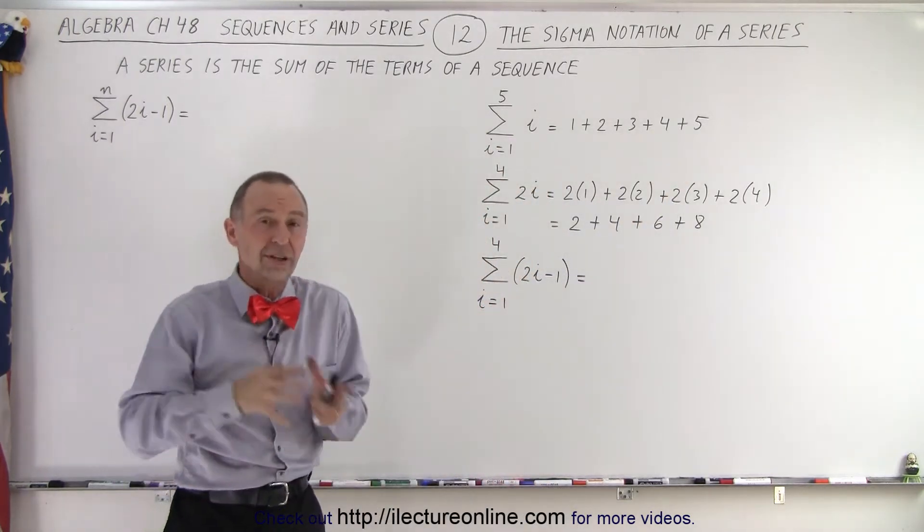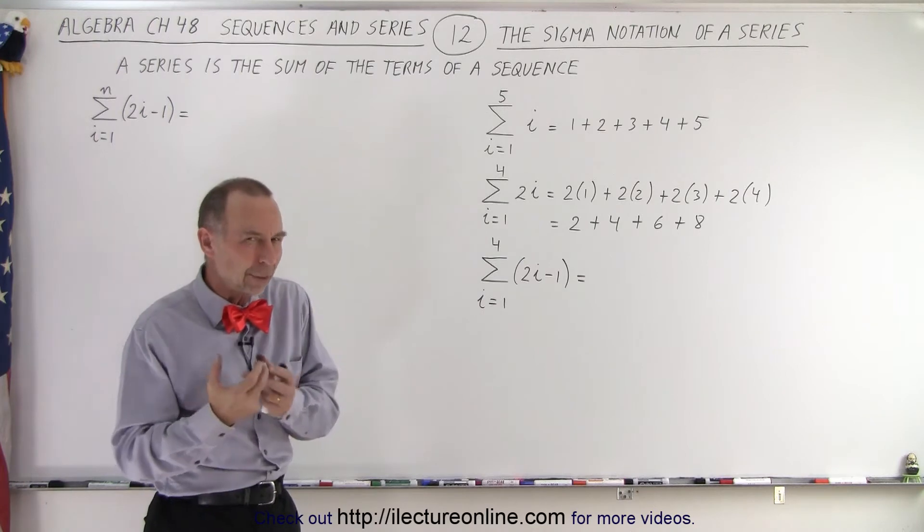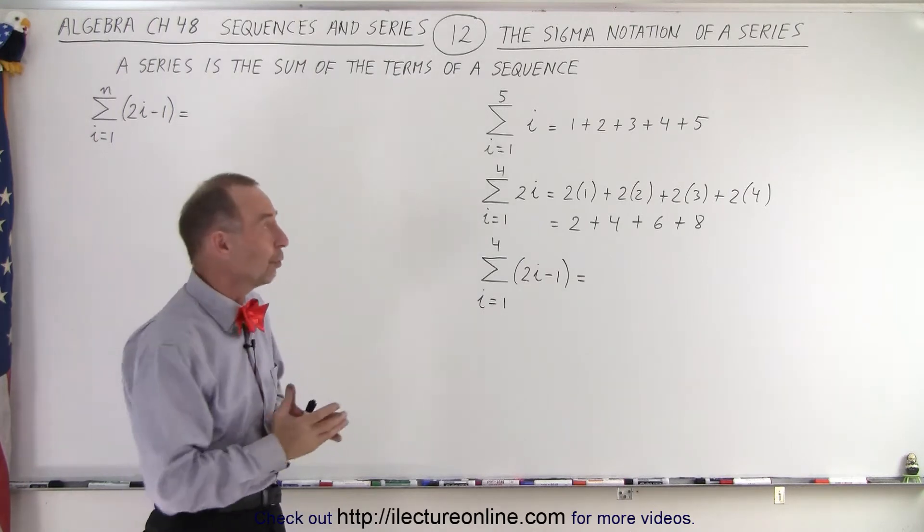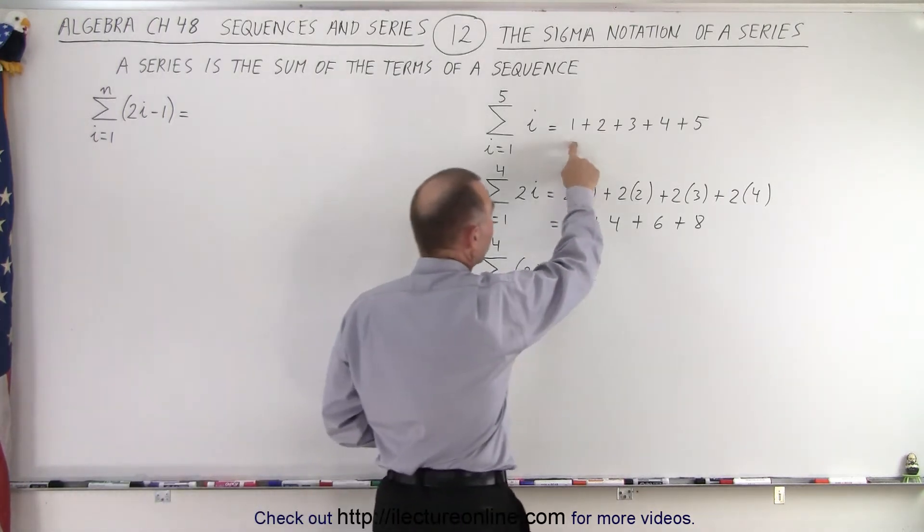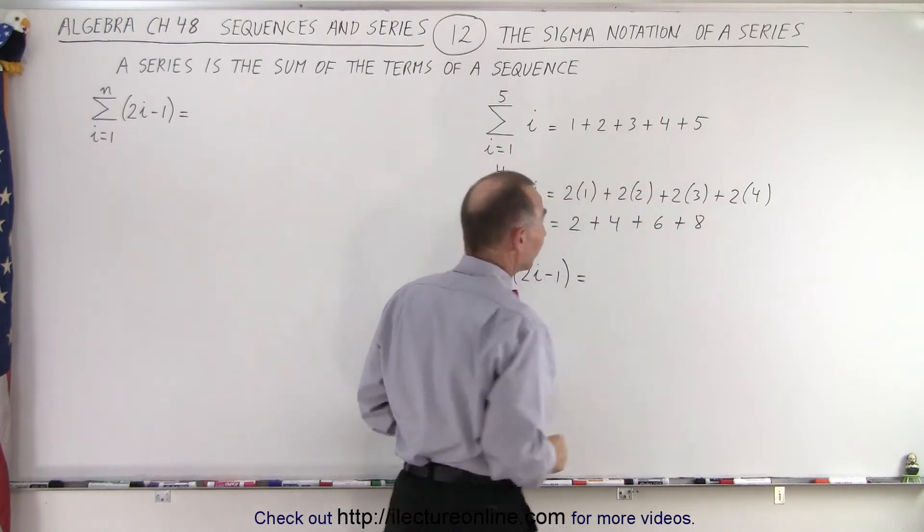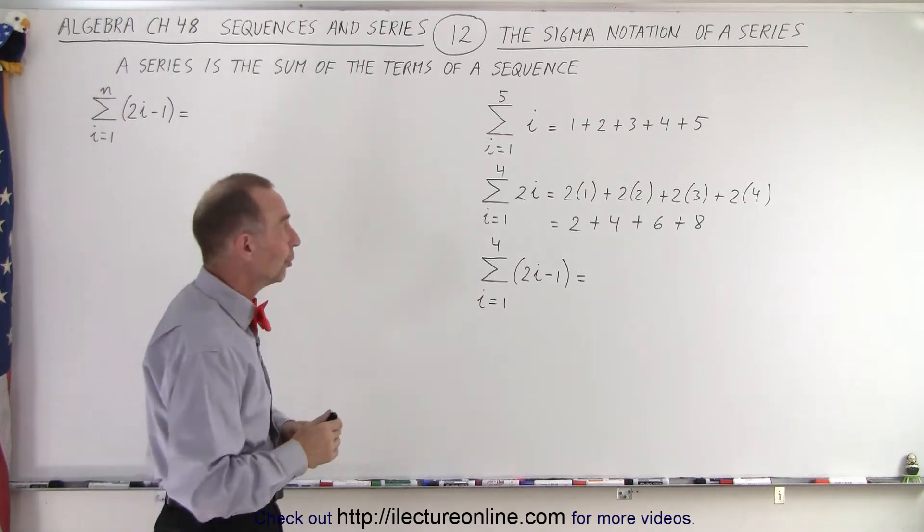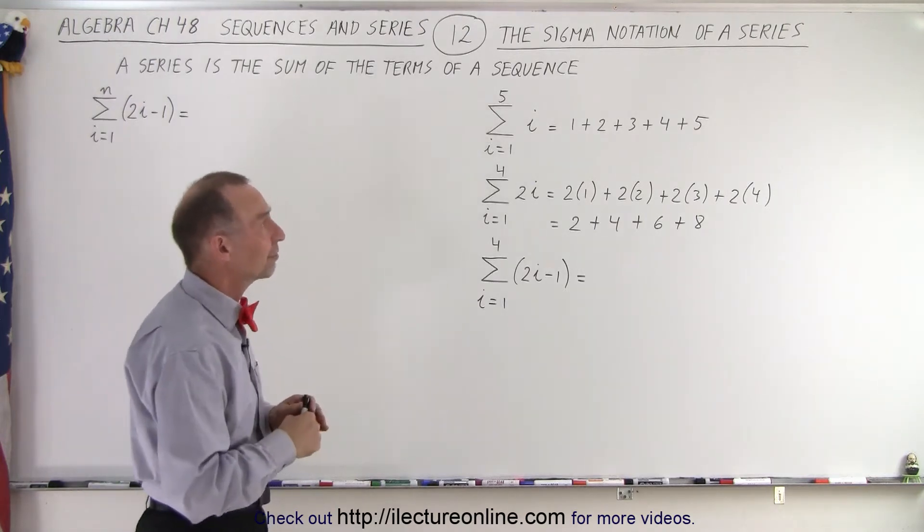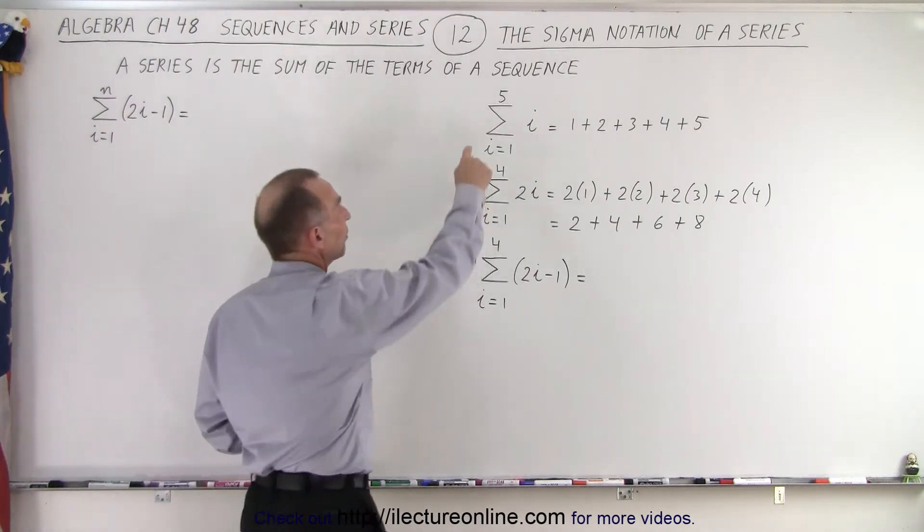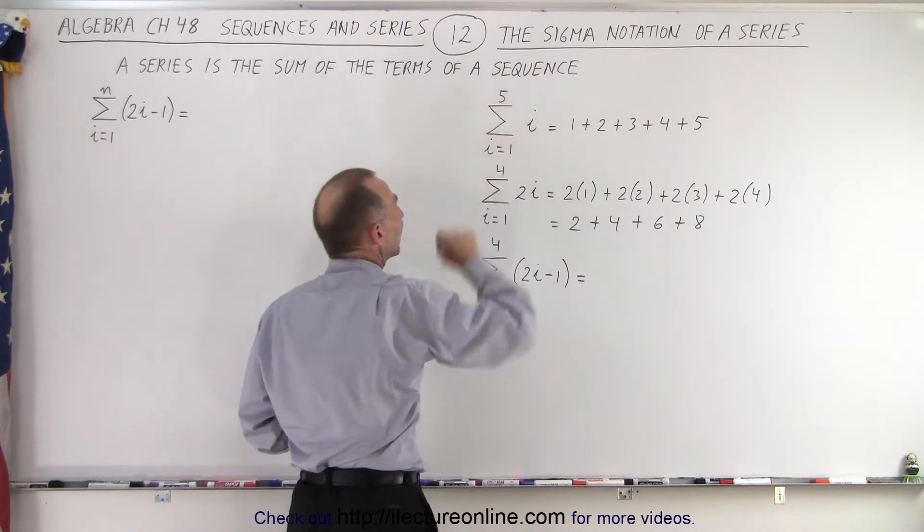Well how do we turn that into a series where we're going to sum them up and how do we write that in a compact form? Well we could write it as 1 plus 2 plus 3 plus 4 plus 5 but what if we have an infinite series? We can't sit there and forever just add up all the terms. We need to write in a compact form and to do that we have this symbol right here which is the Greek letter sigma.